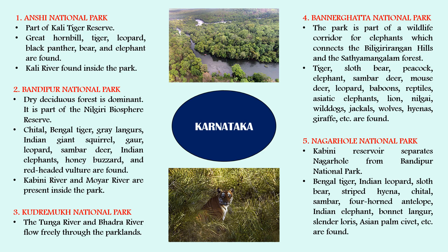The first state is Karnataka. In Karnataka there are mainly five national parks: Anshi National Park, Bandipur National Park, Kudremukh National Park, Bannerghatta National Park, and Nagarhole National Park.